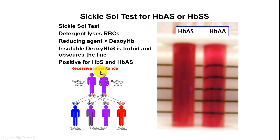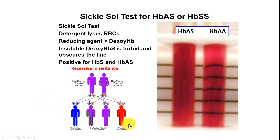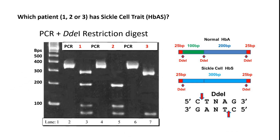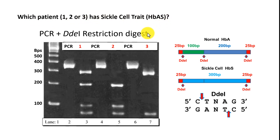This is a recessive inherited disease. The odds are that between a mother and father, only one child may be affected. This is polymerase chain reaction. Which patient — one, two, or three — has sickle cell trait, or HBAS?